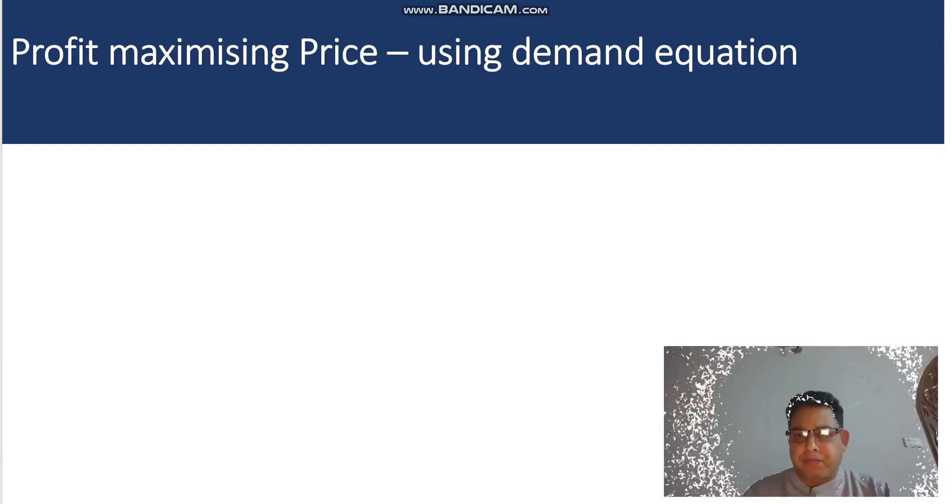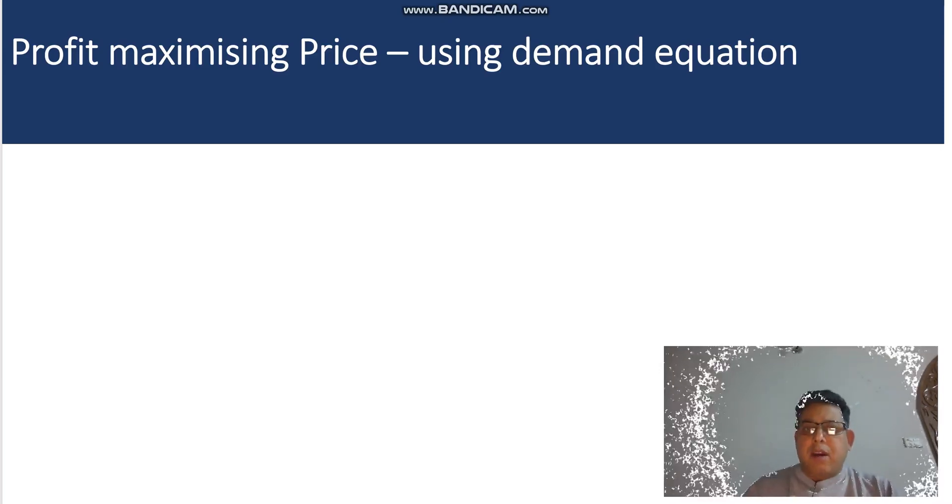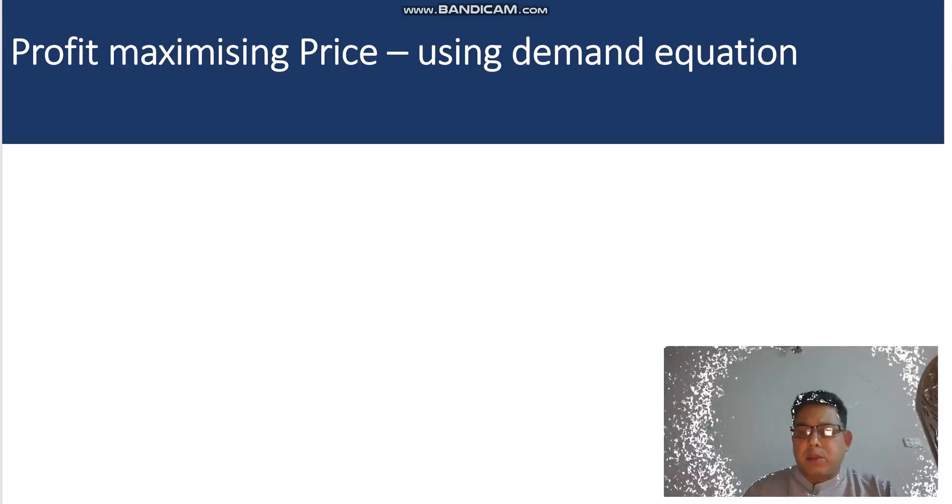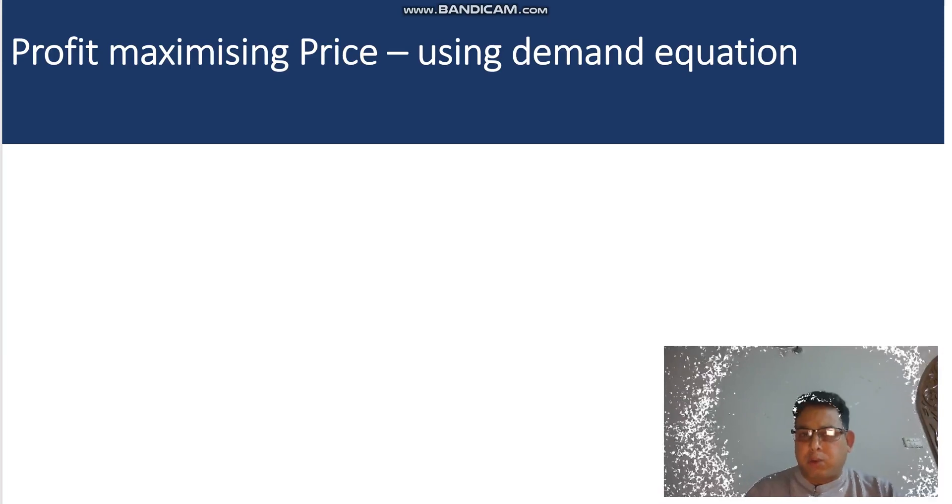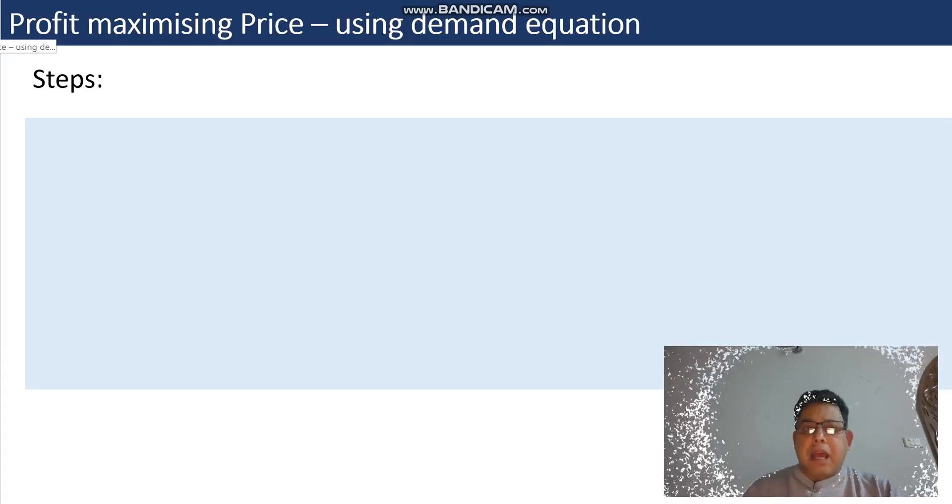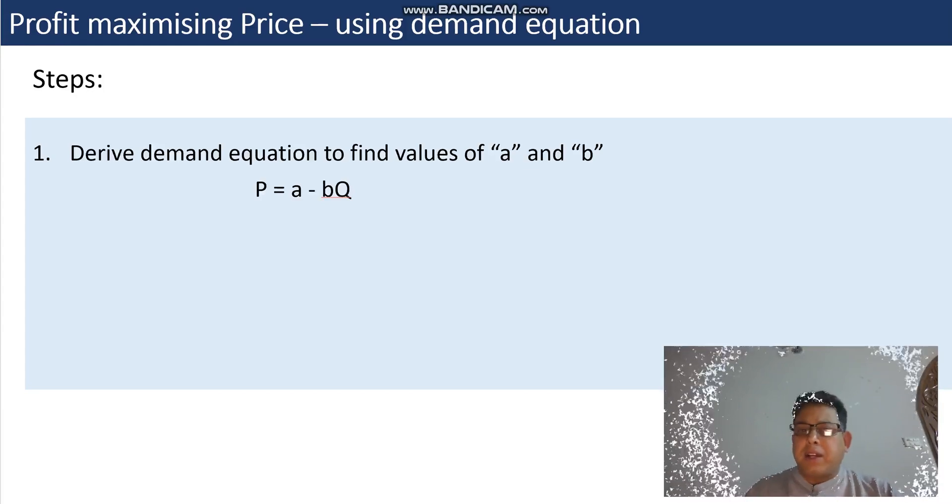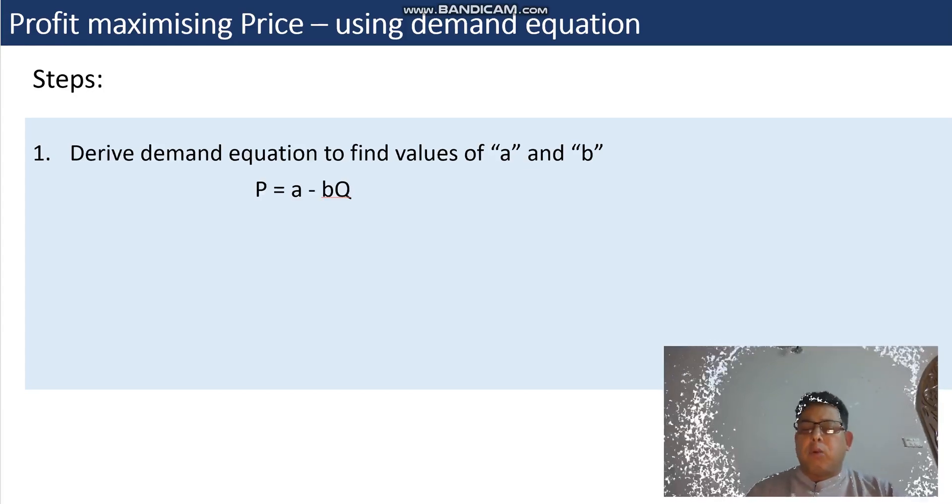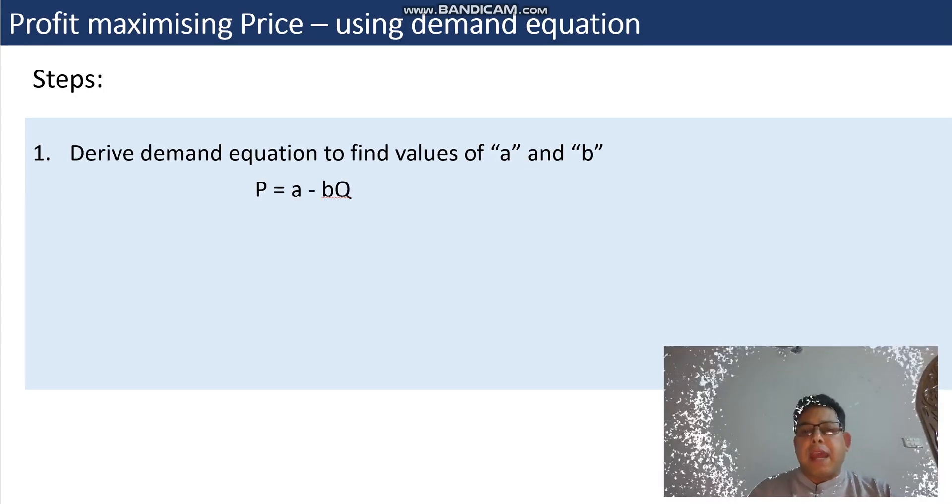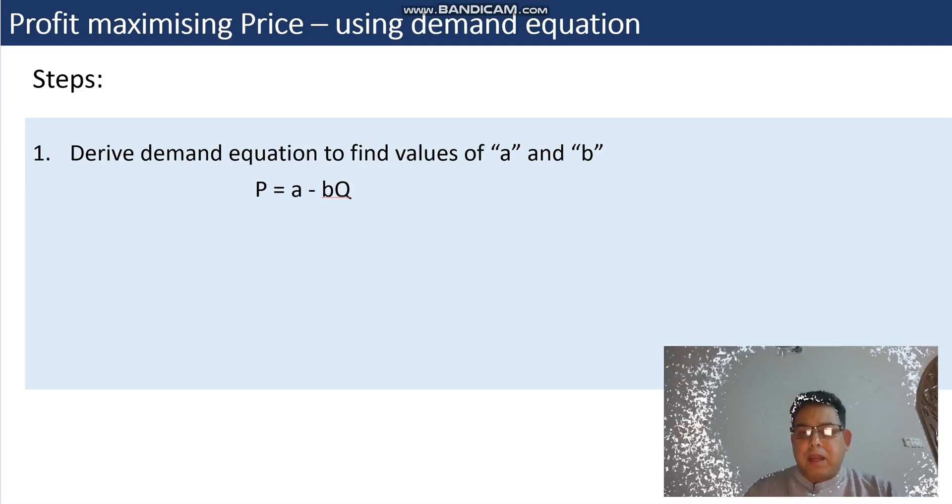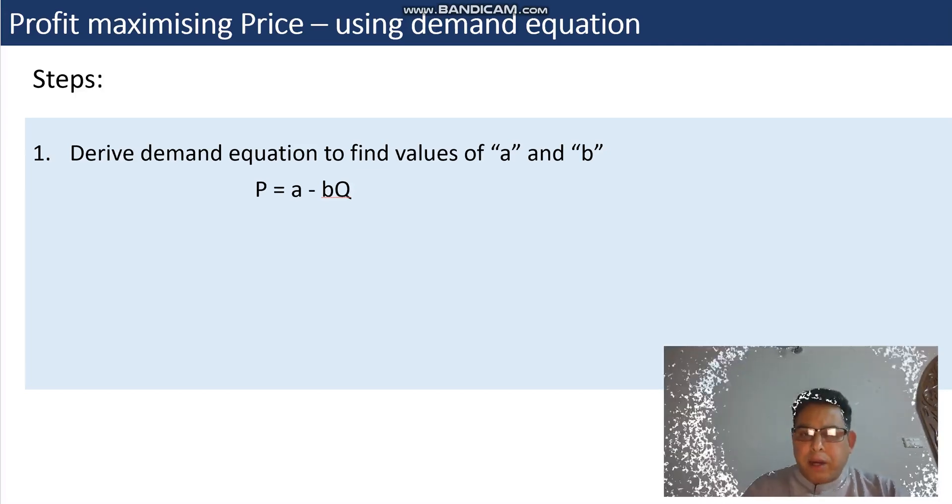Here are some of the steps which we can go through and then we are going to look at a short example. The first step is that we have to derive the demand equation in order to find the values of a and b.